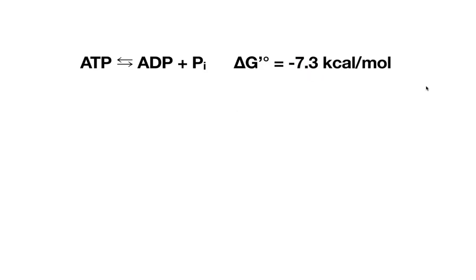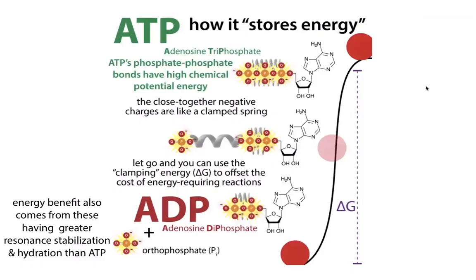Why is this? There are several different reasons and it's not as simple as you might have thought. The easiest thing to grasp is we're freeing the charge repulsion. I like to think about ATP's three phosphate groups as being like a clamped spring. Those negative charges of the phosphate groups are going to be repelling one another. Sticking these opposite charges right next to one another takes energy to hold — like holding a clamped spring. If you're able to cut one or two off, it's like unclamping the spring, and that releases energy.